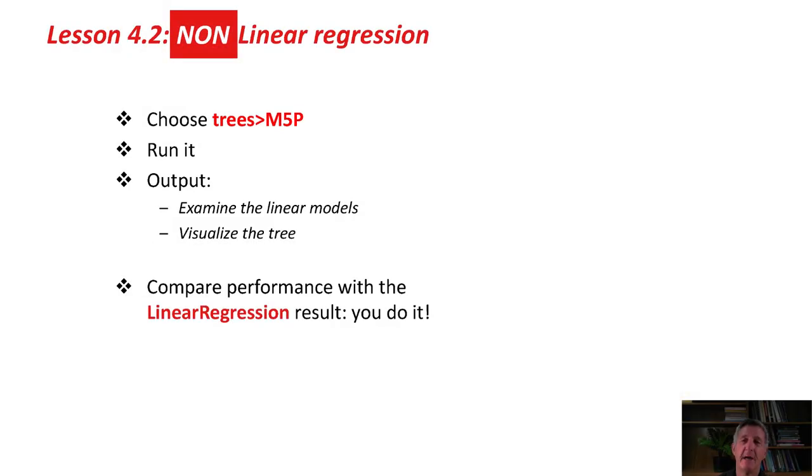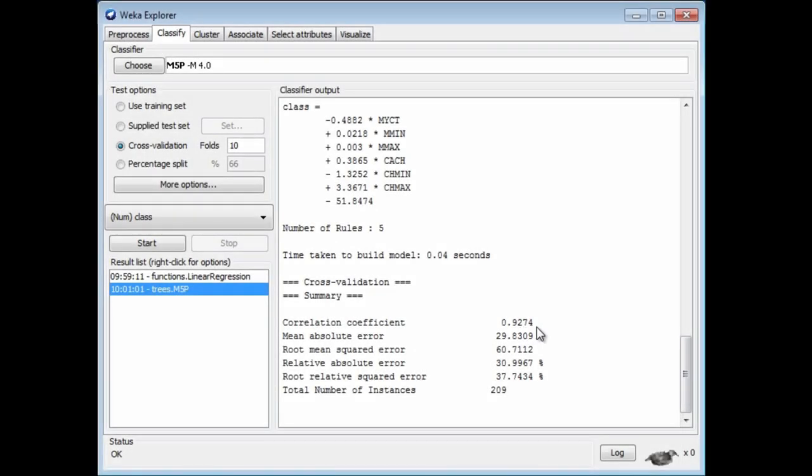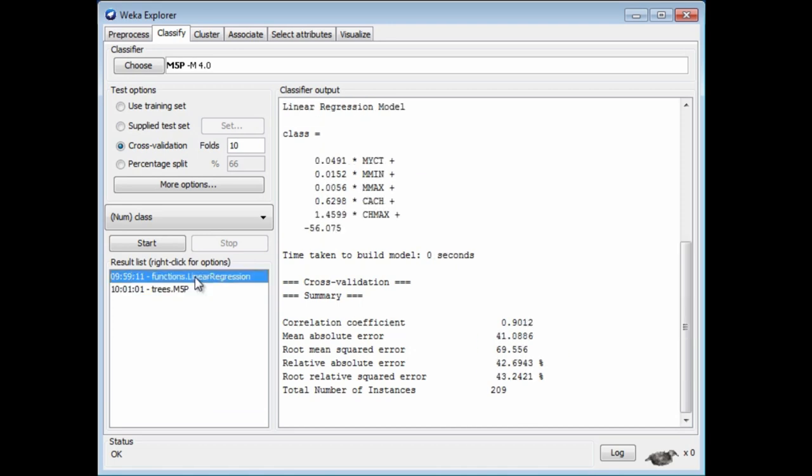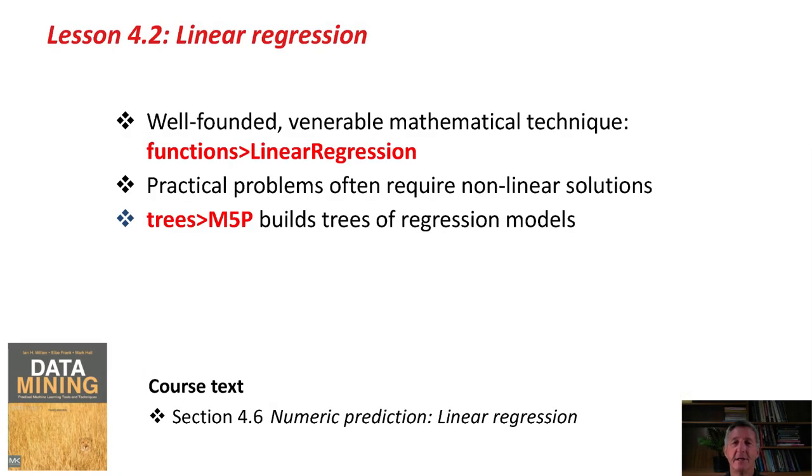We chose trees, m5p, we ran it, and we looked at the output. We could compare the performance of these performance figures, a 92-93% correlation, a mean absolute error of 30, and so on. We could compare those with the ones for the regular linear regression. We just got a slightly lower correlation and a slightly higher absolute error. In fact, I think all of these error figures are slightly higher. That's something we'll be asking you to do in the activity associated with this lesson.